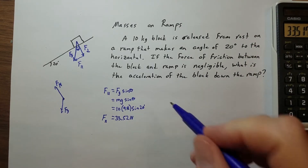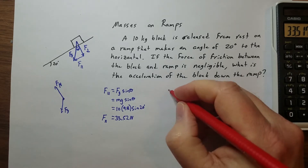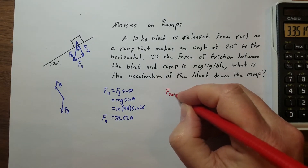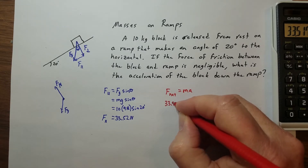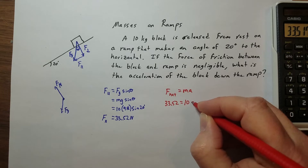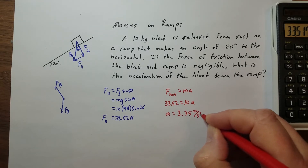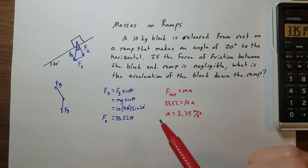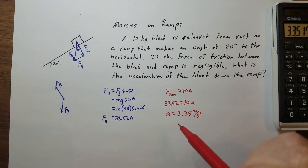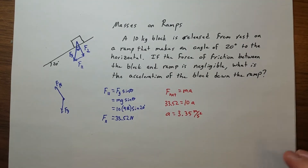Since there's no friction, we use that force with the mass to find acceleration: F_net = ma. The net force is 33.52 N and mass is 10 kg, so acceleration equals 3.35 meters per second squared. A quick check: on ramp problems you should never get an acceleration greater than 9.8 m/s² — that would be free fall. This one is less than 9.8, so we're good.